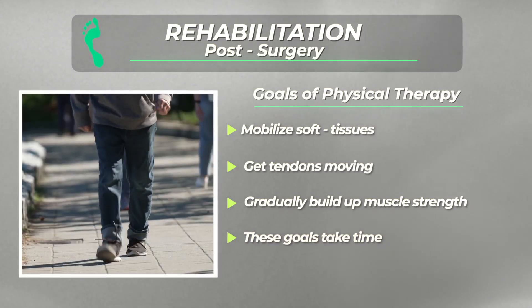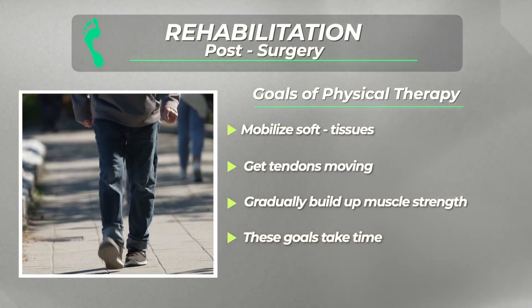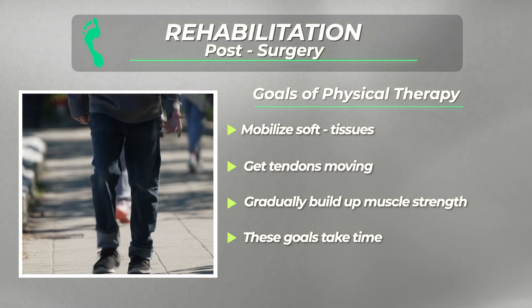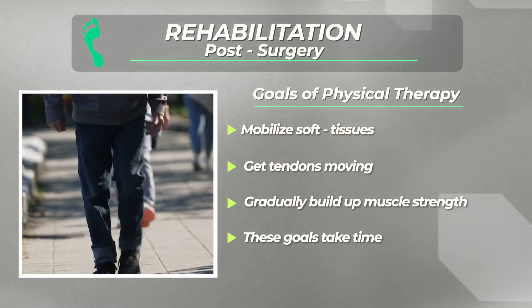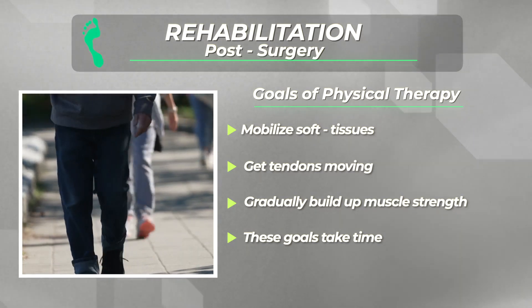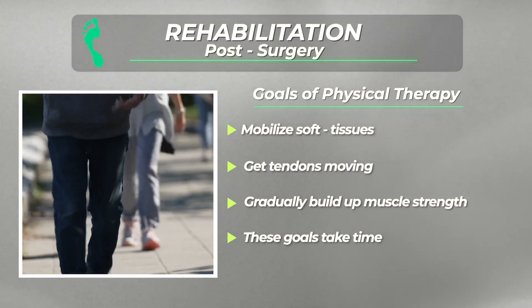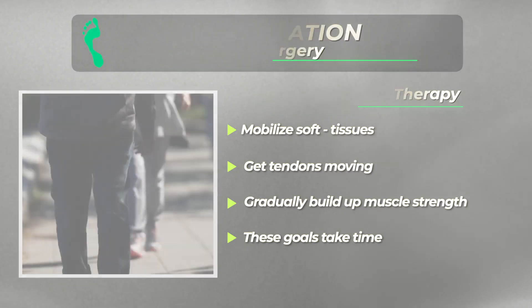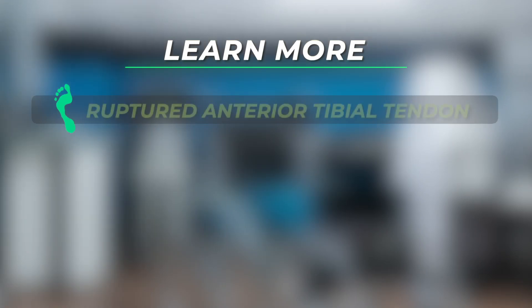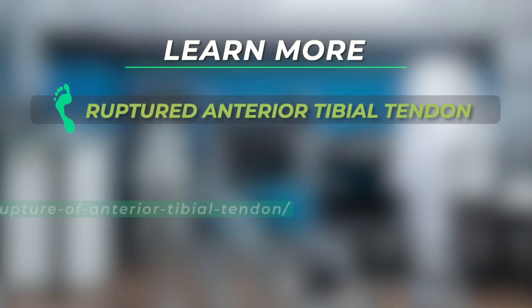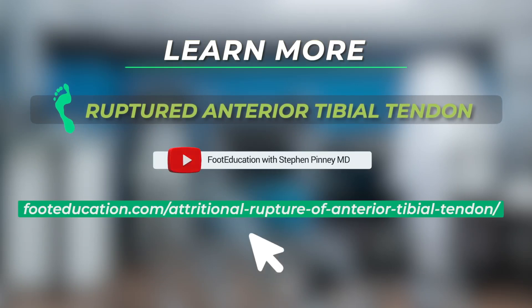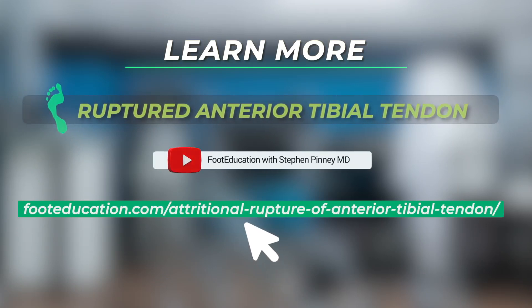This rehabilitation program can take a number of months. Usually, patients are able to walk reasonably normally by 10 to 12 weeks post-surgery, although it can take a year or more before patients reach their point of maximal improvement. I hope that you found this review to be helpful. For more information on anterior tibial tendon ruptures, click on the link in the description below. Wishing you good foot health, I'm Dr. Steve Pinney.